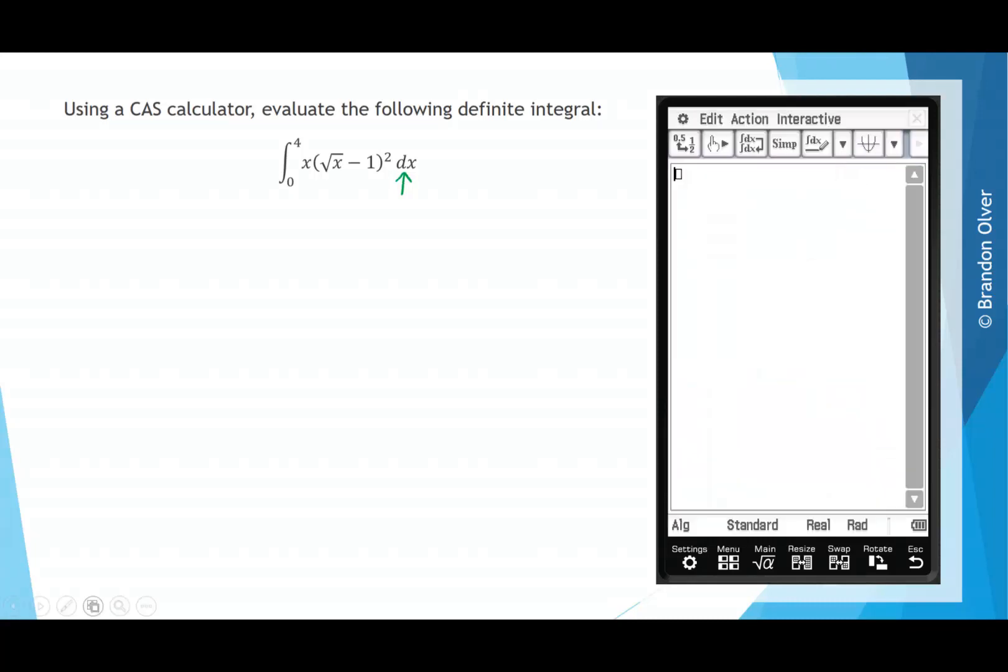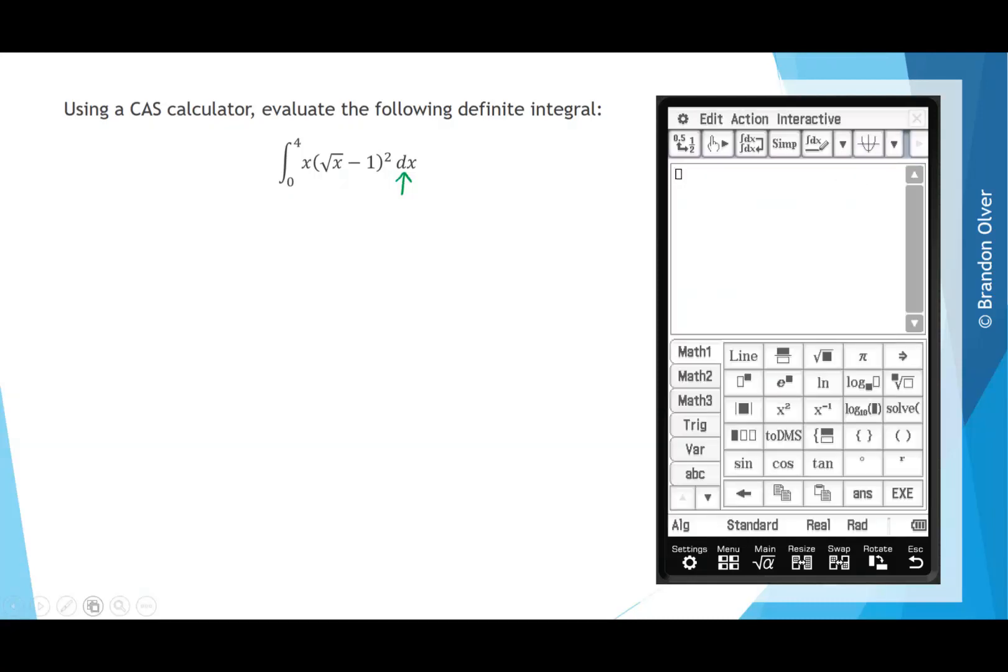On the CAS calculator, go into the main menu. Next, bring up the soft keyboard and go to Math 2. Under Math 2, there's this symbol, which is the integral symbol.